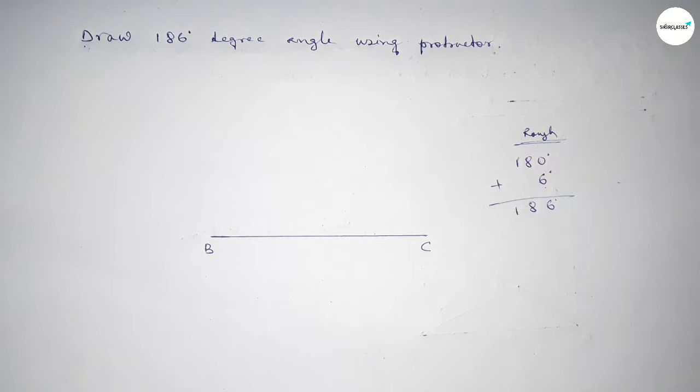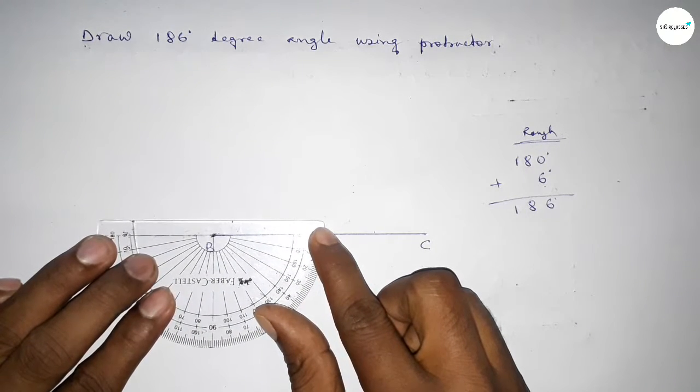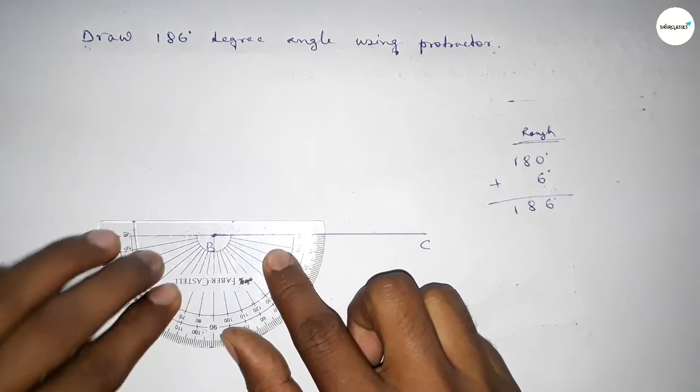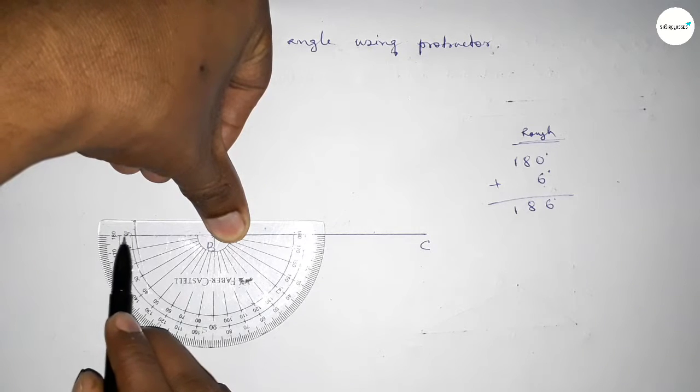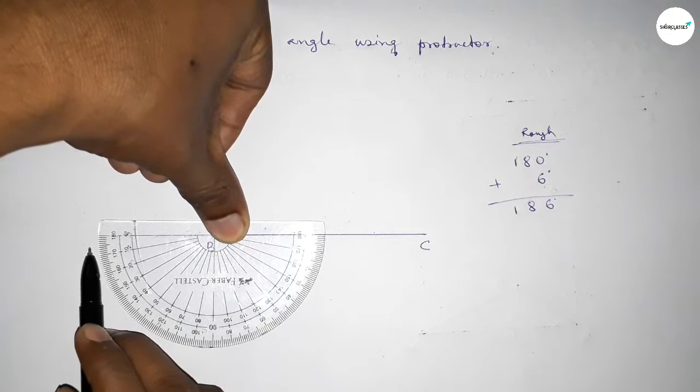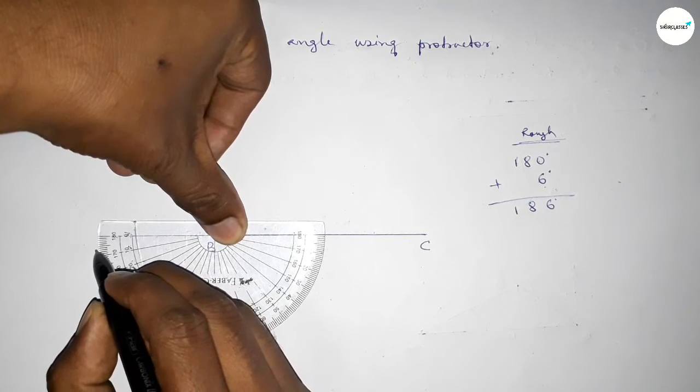So this is 180 degrees. Now again, putting the protractor on point B this way perfectly, then counting the angles. This is 180 degrees, and this is 1, 2, 3, 4, 5, and 6.